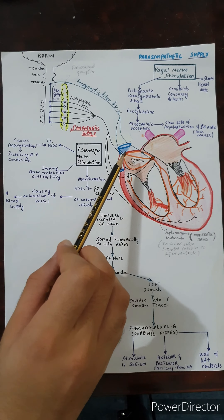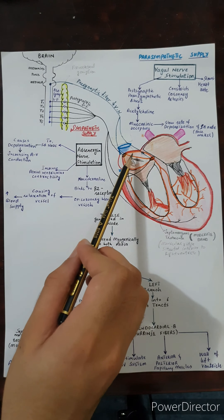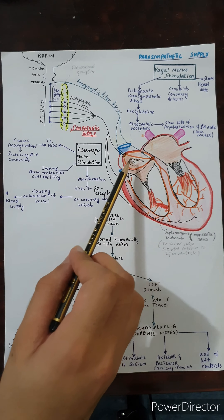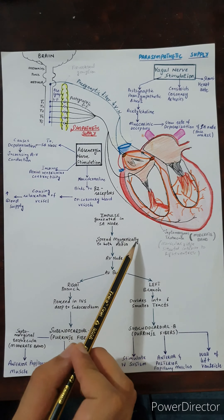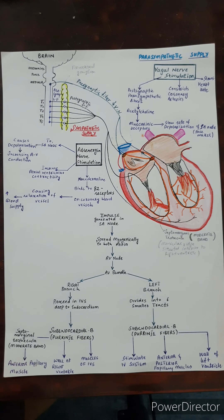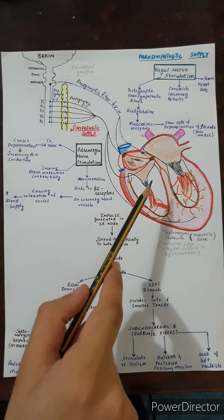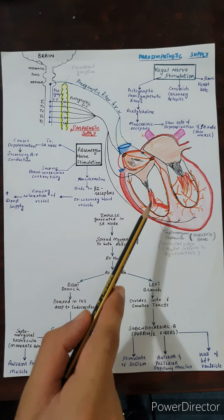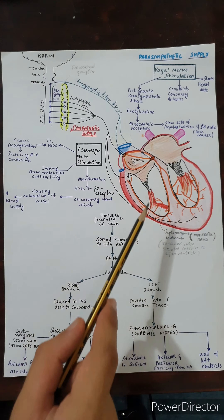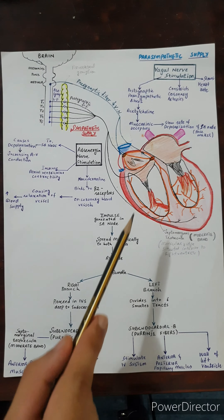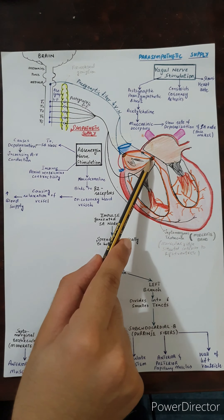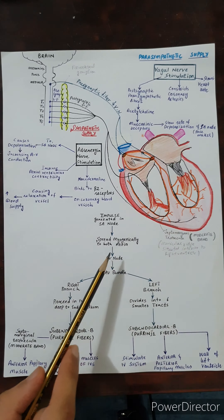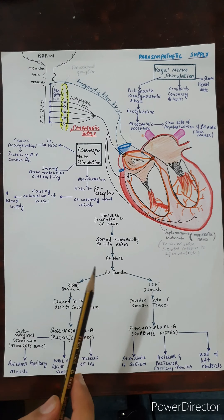The impulse is generated in the SA node. After the generation of the impulse, the impulse passes myogenically to the atrium. Myogenically means through the wall of the atria. Through the wall of the atria, the impulse reaches the AV node.